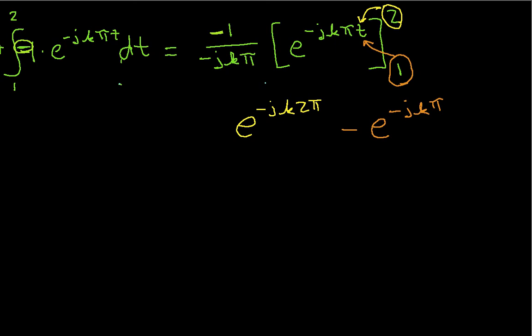Let's see. I guess we can combine these guys. These negative signs cancel each other. So I have 1 over jkπ times (e^(-jk2π) - e^(-jkπ)).